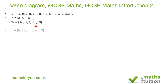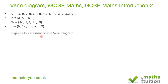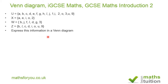And then subset Z, which has the elements: B, L, C, D, I, O, U, and 9. The question says to express this information in a Venn diagram.